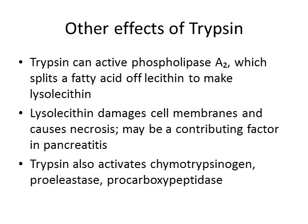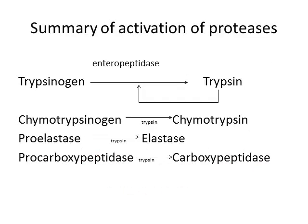In terms of duodenal function, trypsin also activates all those other pro-enzymes: chymotrypsinogen, proelastase, and procarboxypeptidase. To summarize the flow: trypsinogen enters the duodenum, enteropeptidase converts it to trypsin, trypsin autocatalytically generates more trypsin, and then trypsin activates chymotrypsinogen into chymotrypsin, proelastase into elastase, and procarboxypeptidase into carboxypeptidase.